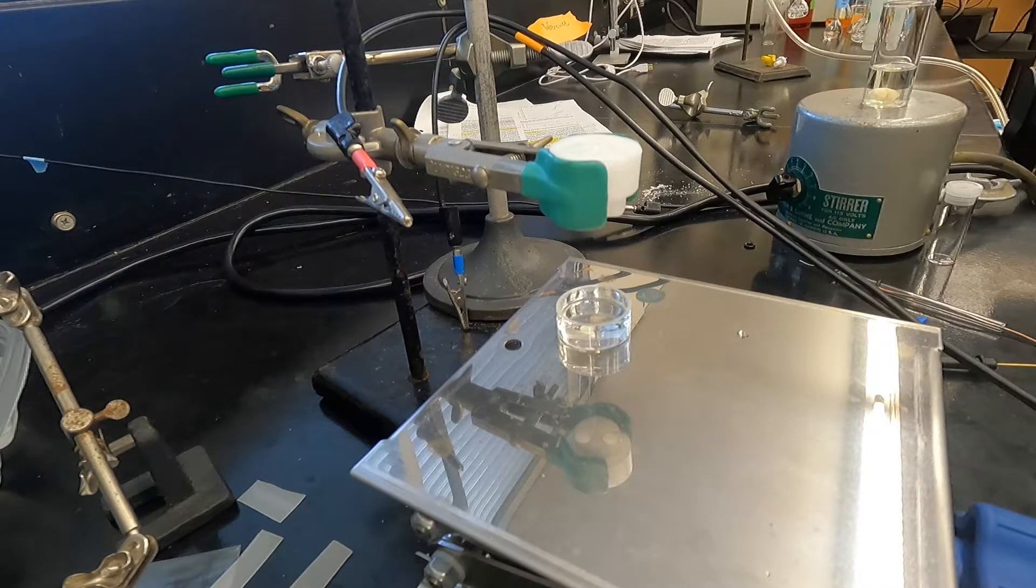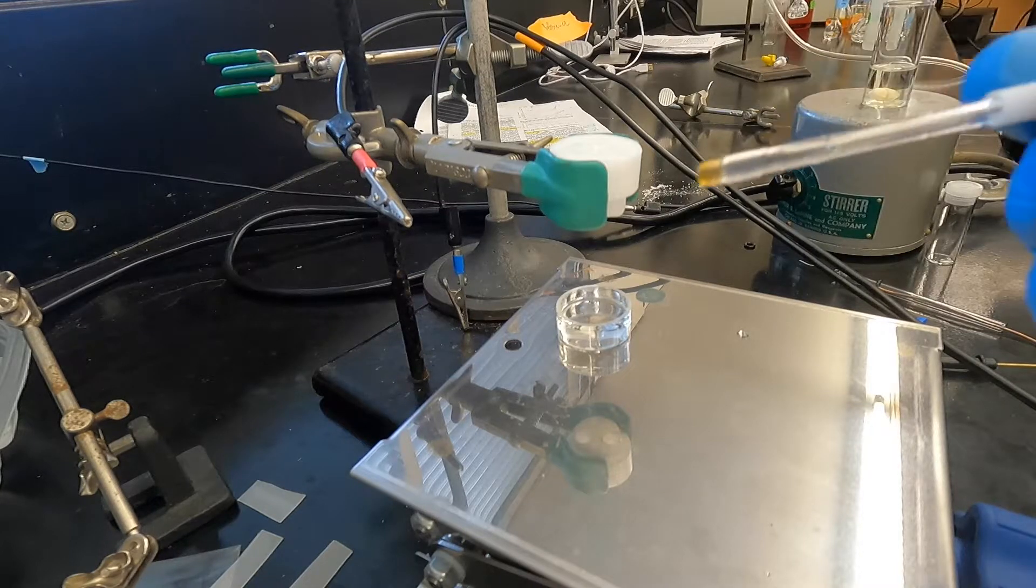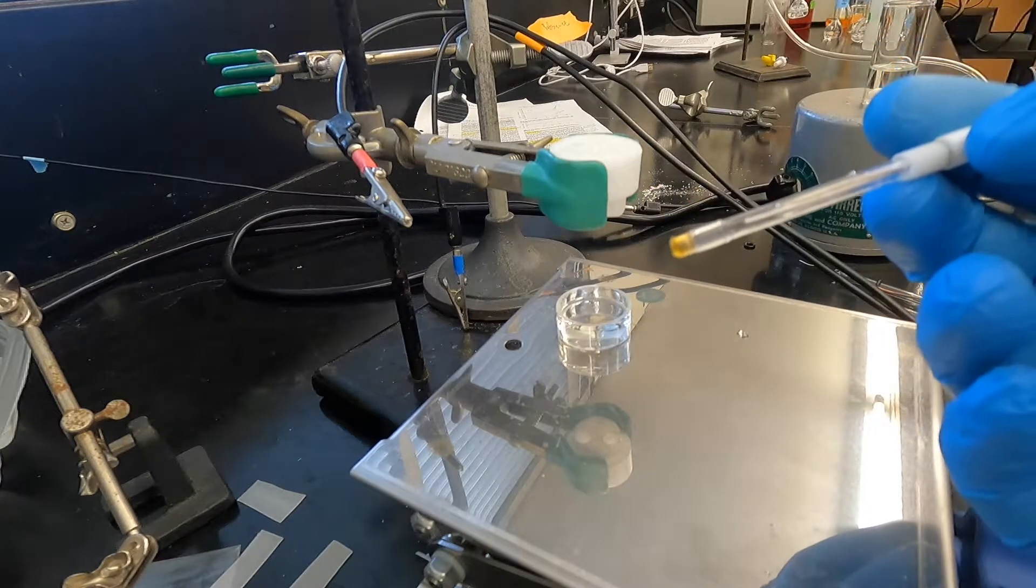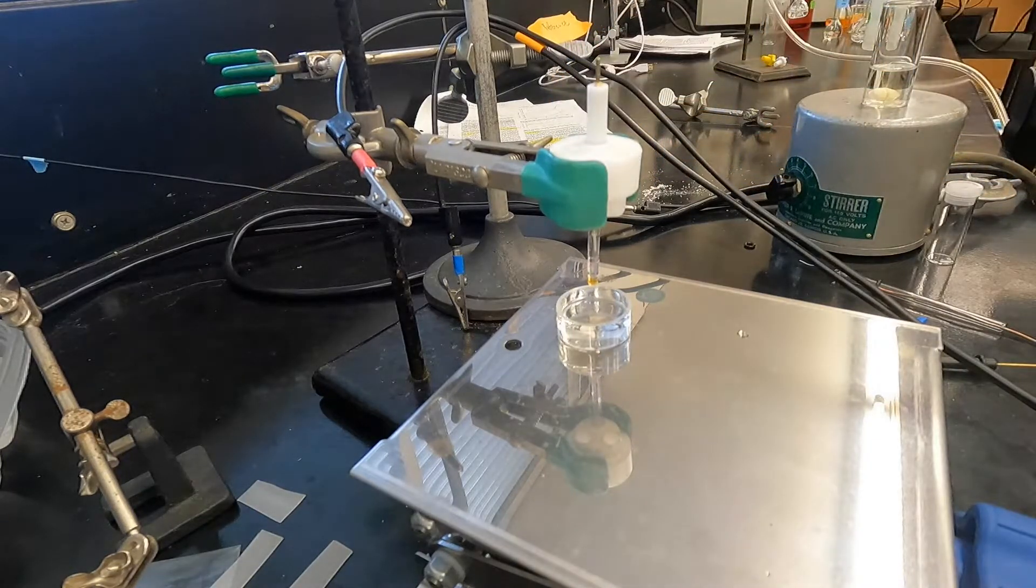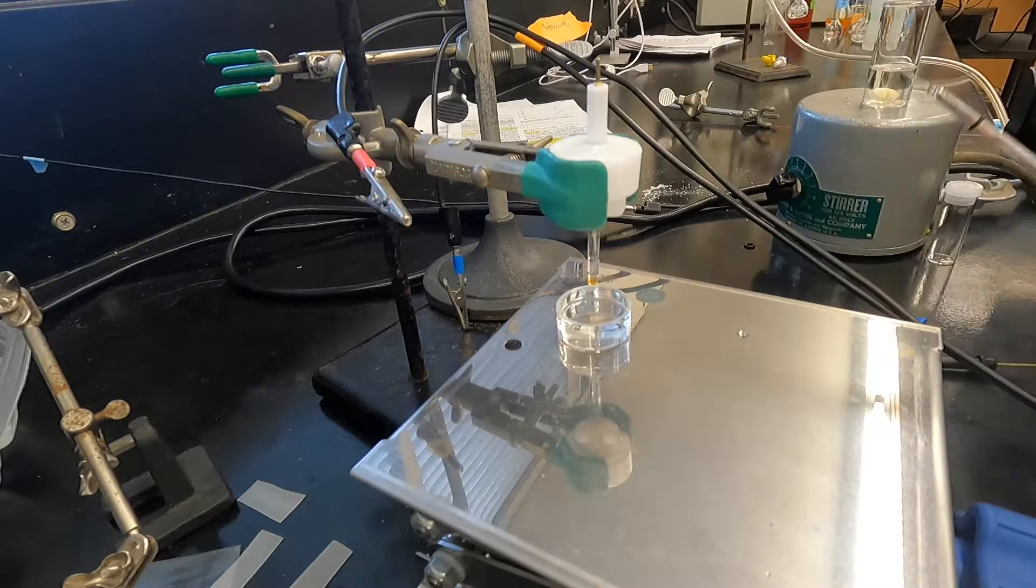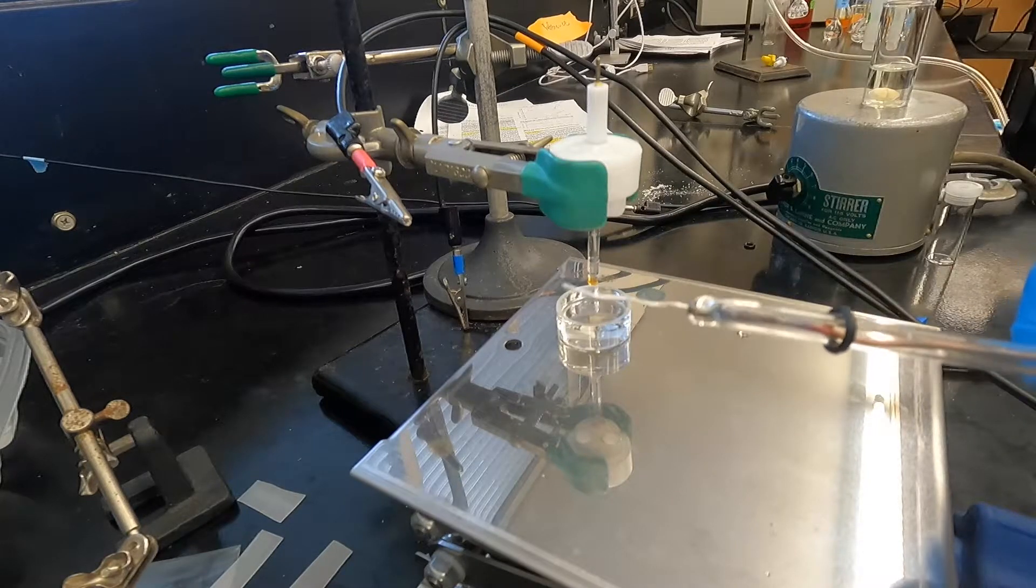You're going to set up a standard cell over at the GAMRI. You're going to drop in a reference electrode that you want to check, make sure it's clean, and then you're also going to drop in a platinum wire counter electrode.